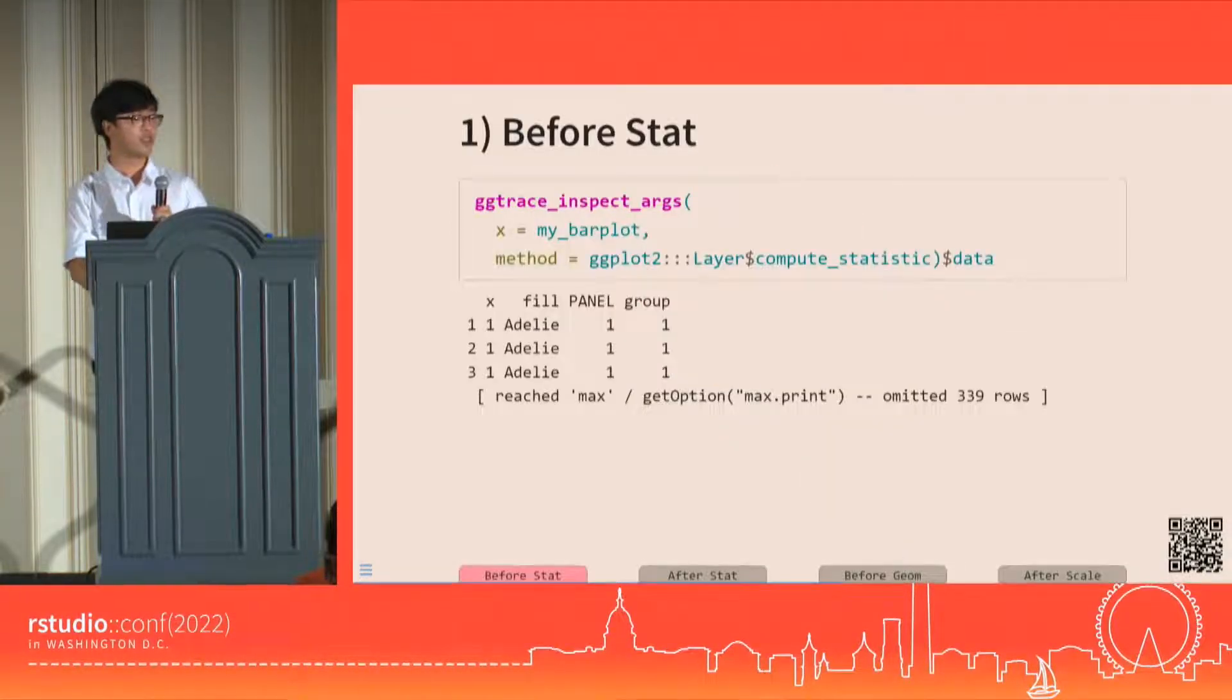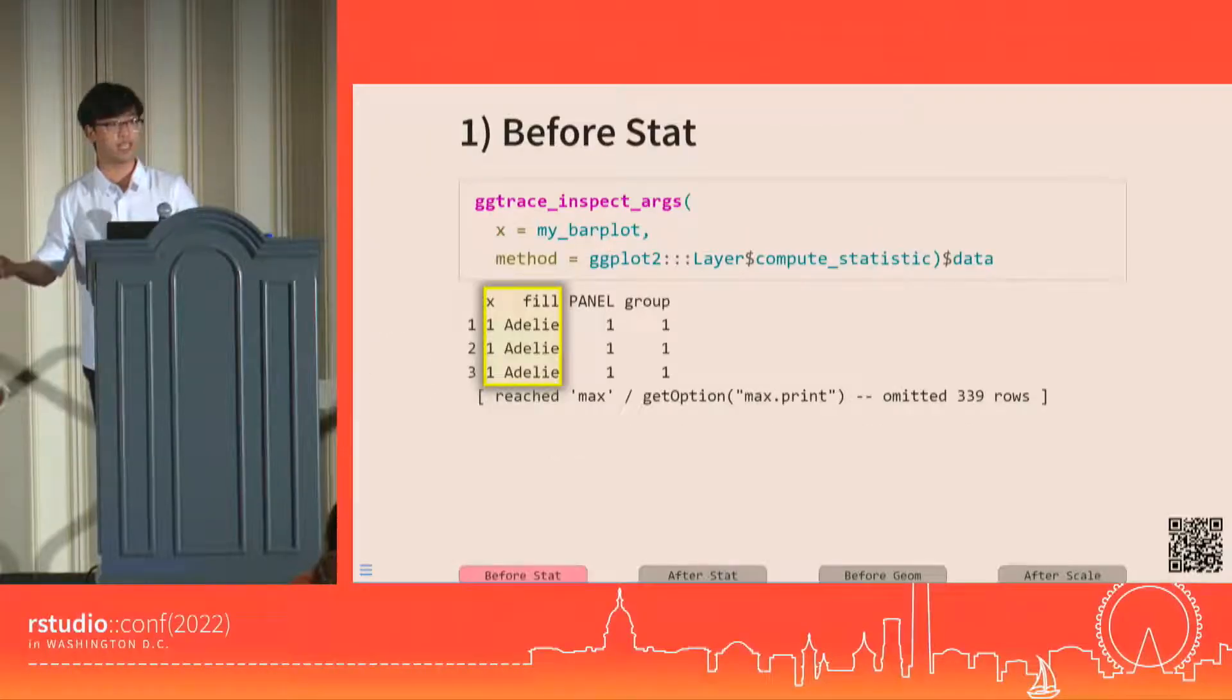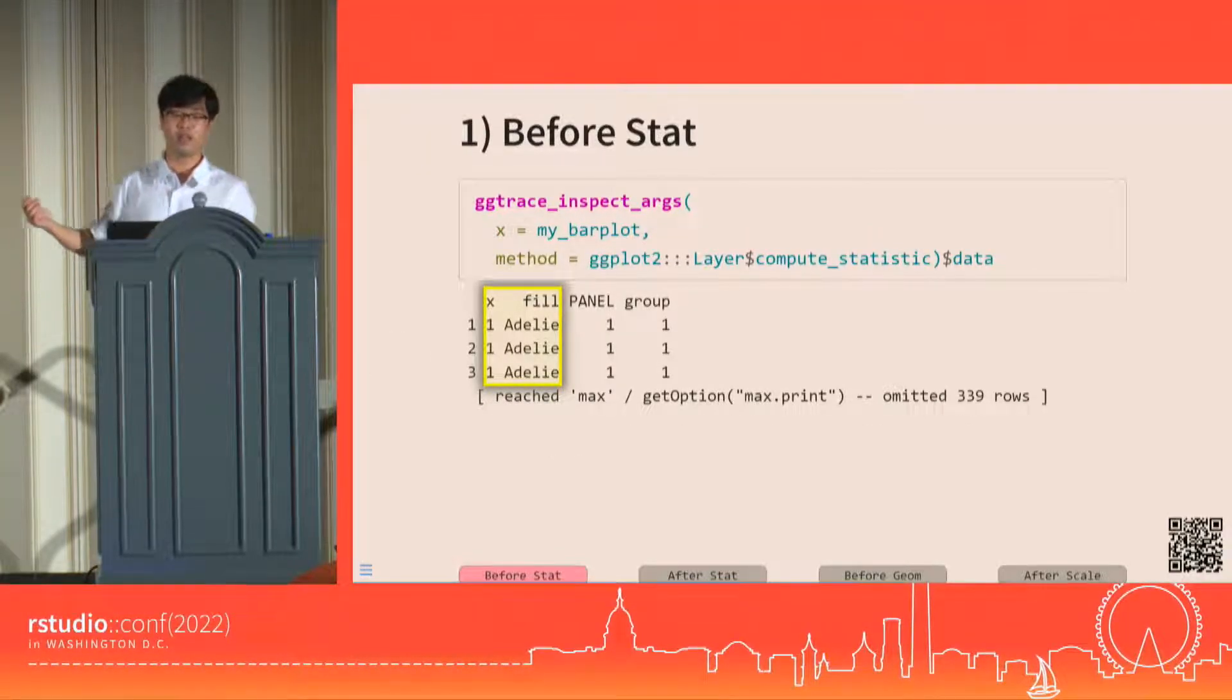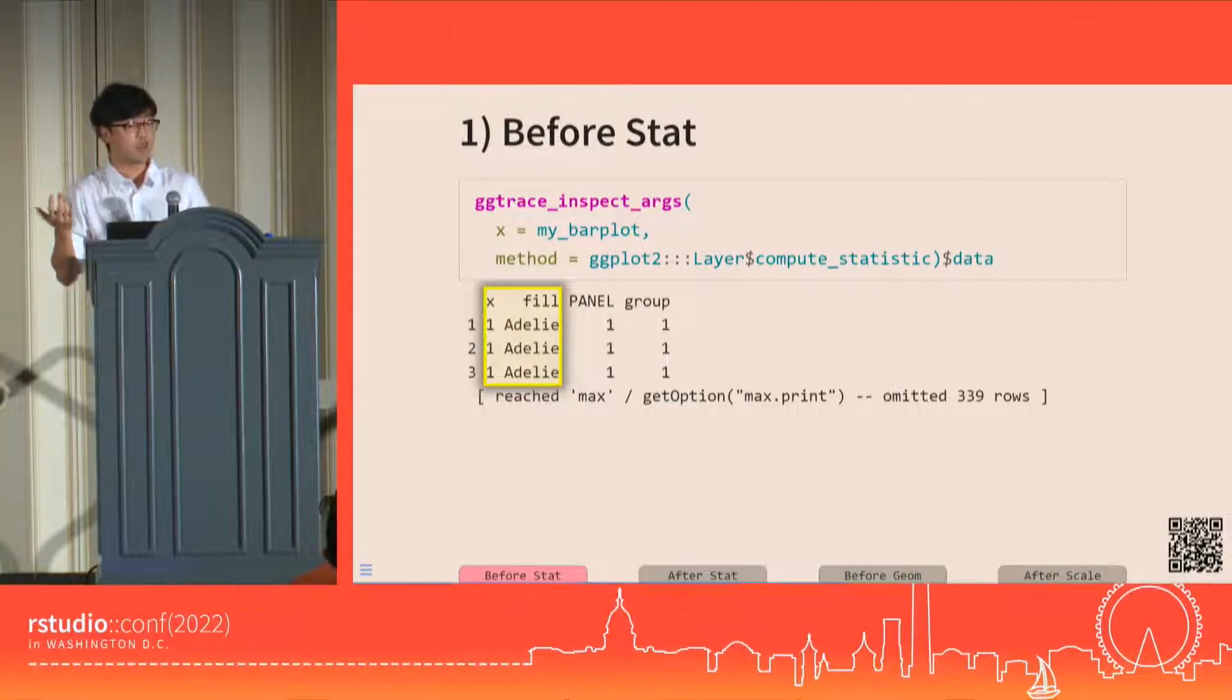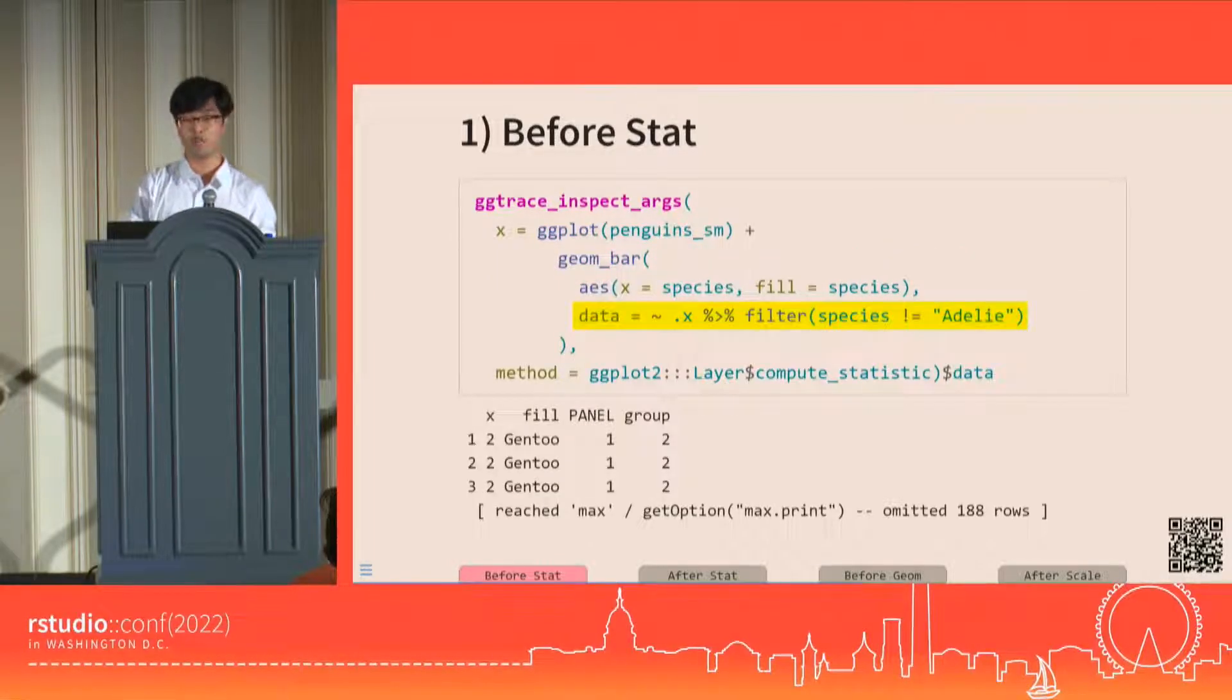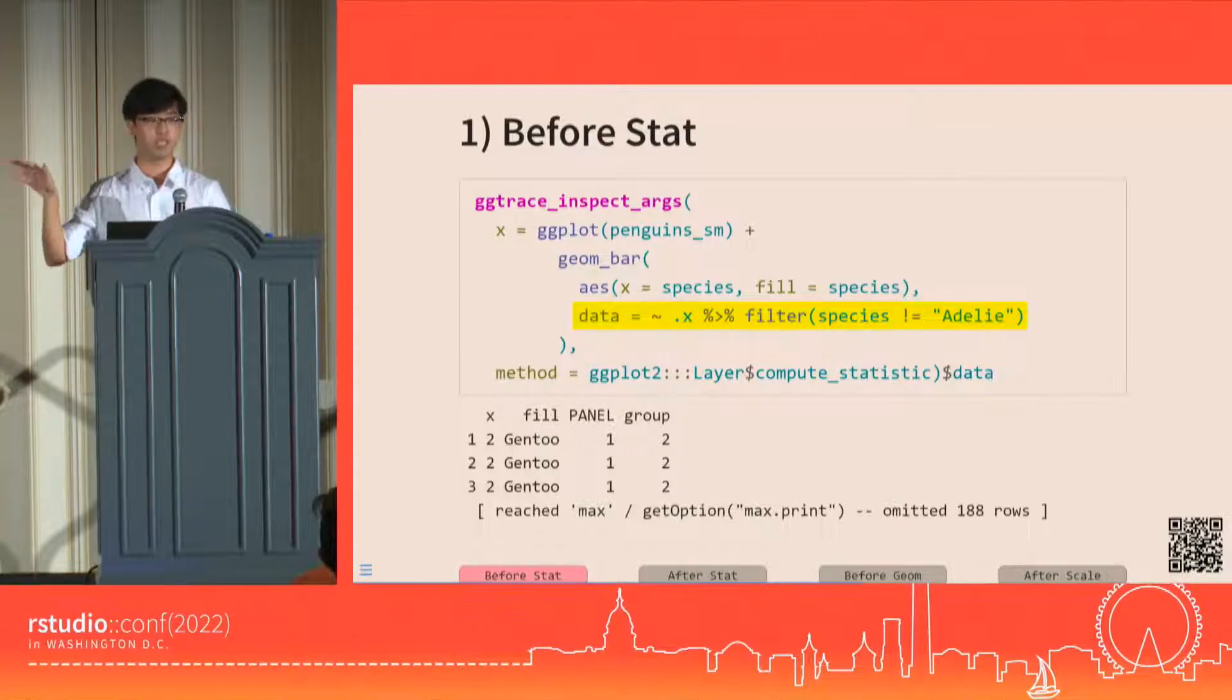Let's look at some data frames. We start by intercepting the data at the before stat stage. We use ggtrace_inspect_args to pull out the data argument that was passed into this ggproto method, which gives us a data frame that looks like this. Here our initial aesthetic mappings are reflected in the presence of these columns named after the actual aesthetics, like x and fill, which is basically select and rename. We see some other things that happen to the data at this point as well, like the x is numeric and we have these new columns like panel and group. If we pass a function to the data argument of the layer, this is also the point by which that would get applied to our data.